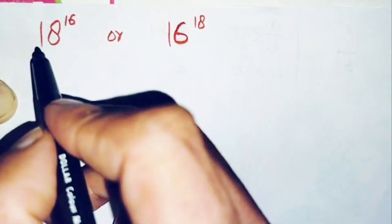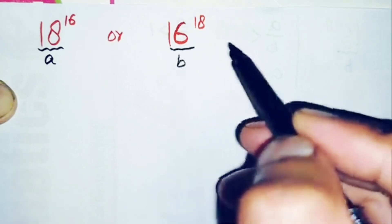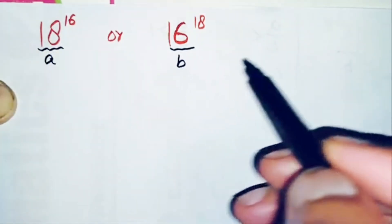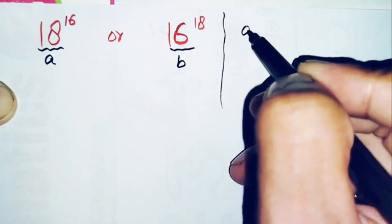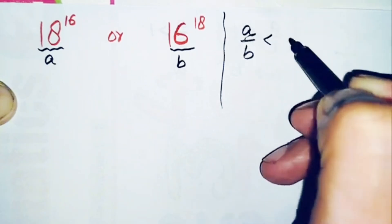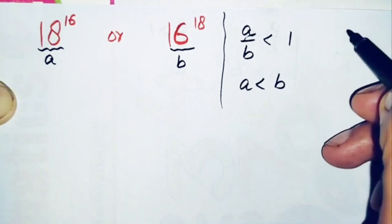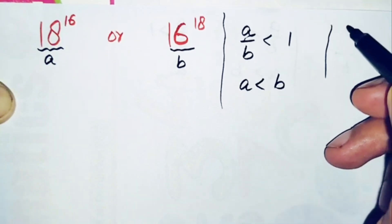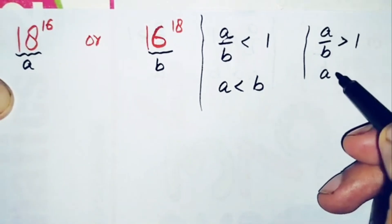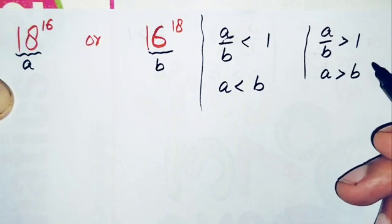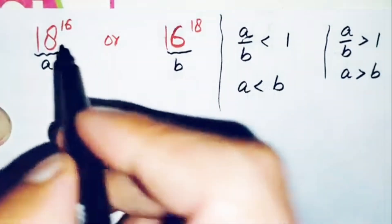To compare these two numbers, let us suppose the first number is equal to a and the second number is equal to b. To prove which one of them is greater and which is smaller, we will use these results: if a divided by b is less than 1 then a must be less than b, and if a divided by b is greater than 1 then a must be greater than b. We will try to use one of these results.